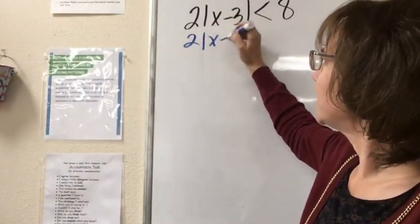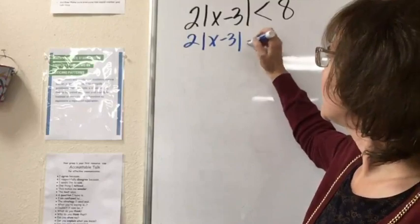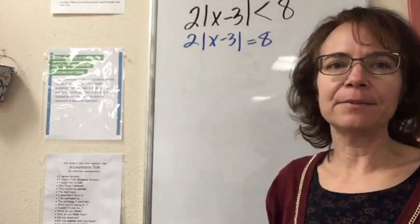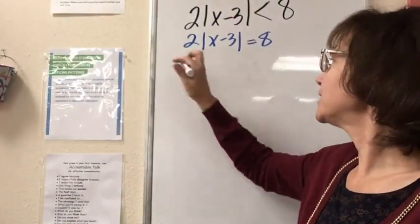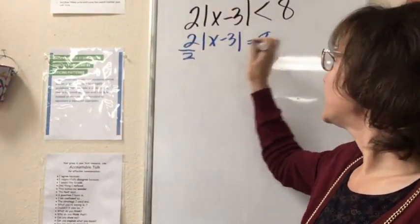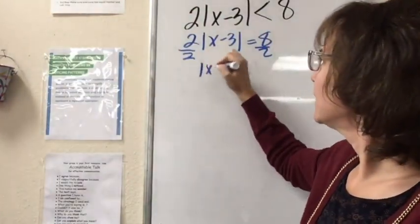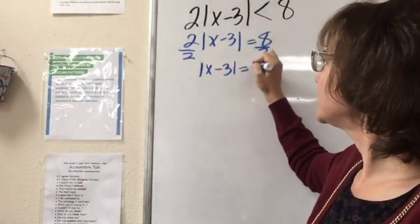So 2|x-3| = 8. We can figure out what those boundary points are by solving this absolute value equation. I can divide both sides by two, isolating my absolute value. |x-3| = 4.